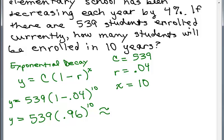And then we're going to round to the nearest number of students. And that rounds to about 358 students. Maybe this is in a rural area where people are moving away.